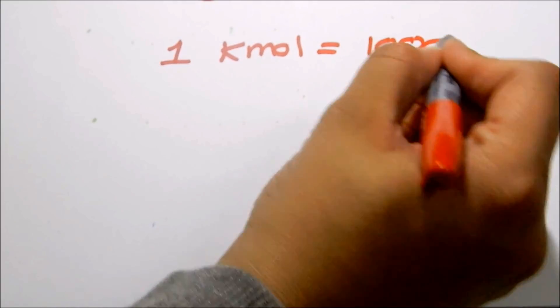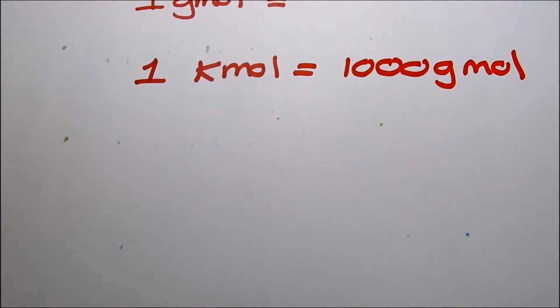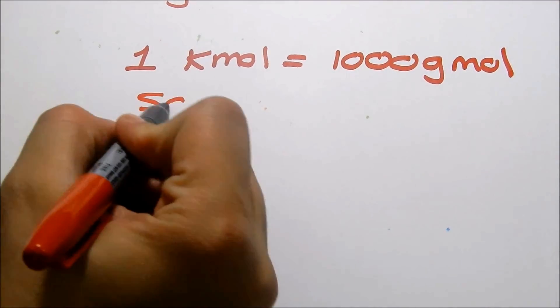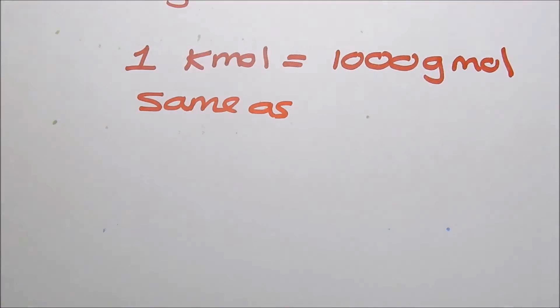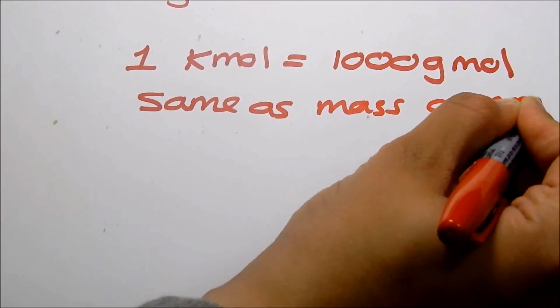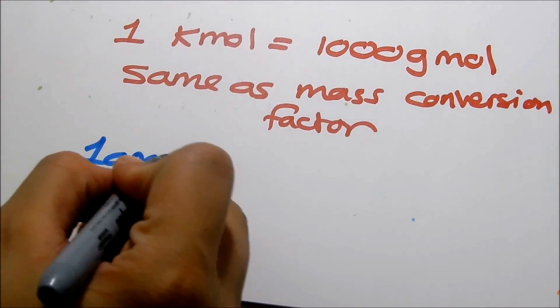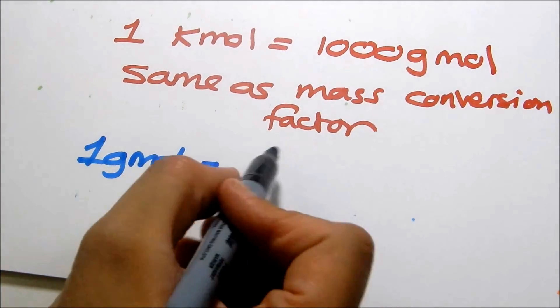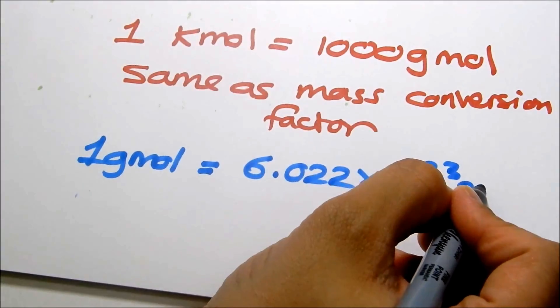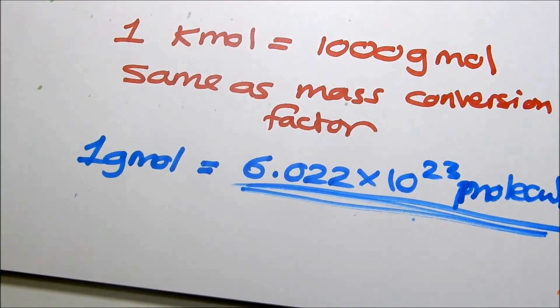So mole or number of moles equals the mass over the molecular weight. Obviously molecular weight you can get from the back of the book in B1 for the elements. Now we have kilomole, pound mole, gram mole. These are all mole units and have the same conversion factor as the mass units. We have Avogadro's number, which is one gram mole equals to 6.02 times 10 to the 23 molecules. This will be very useful.